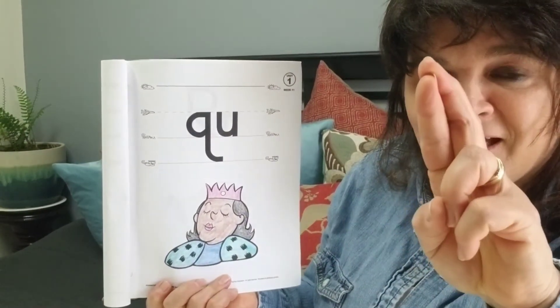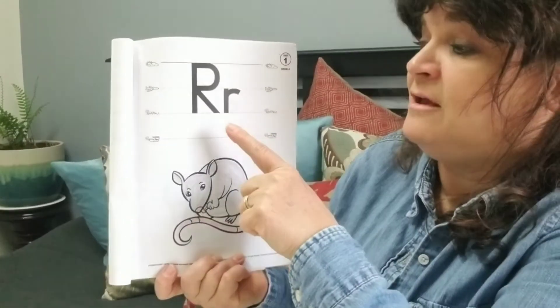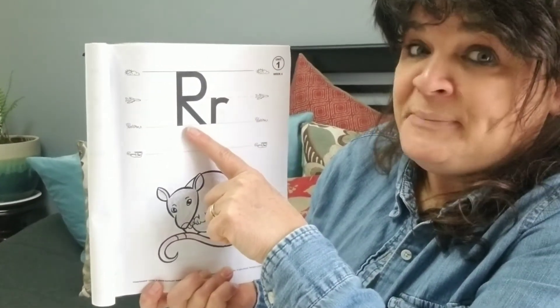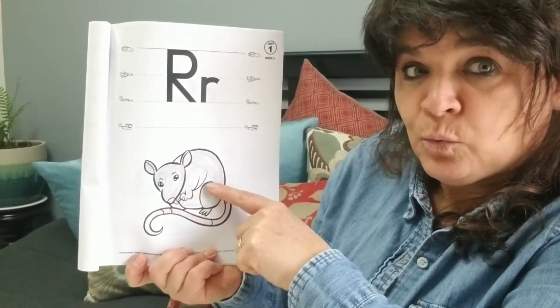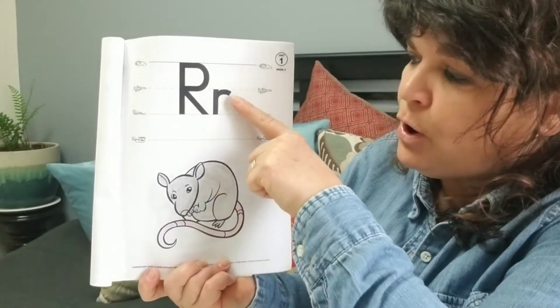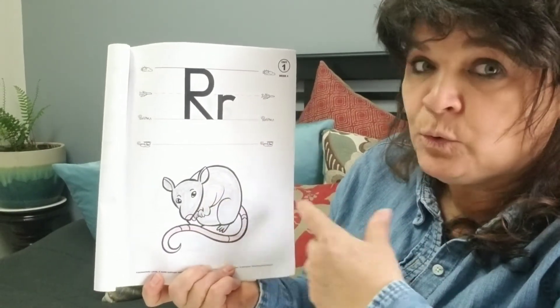This is the letter R. Big R. Little R. R begins words like rat. R. Rat. R.